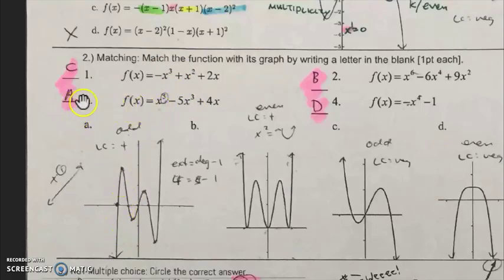Another way you know that it's positive, the answer is number three matches graph A, because you can count the x-intercepts: one, two, three, four, five, so there are five x-intercepts, and then the extremas...